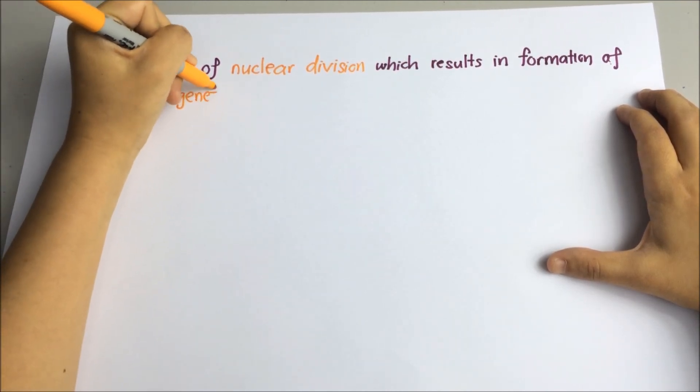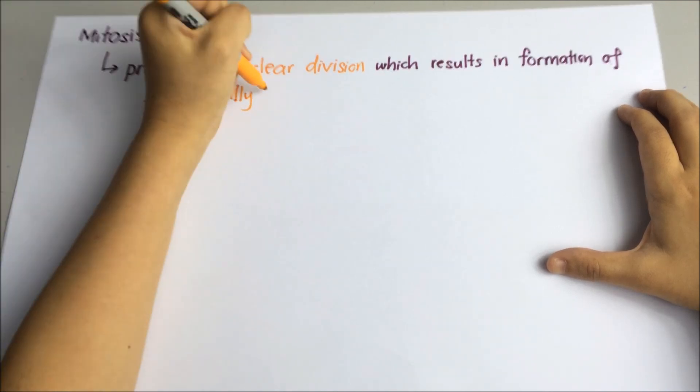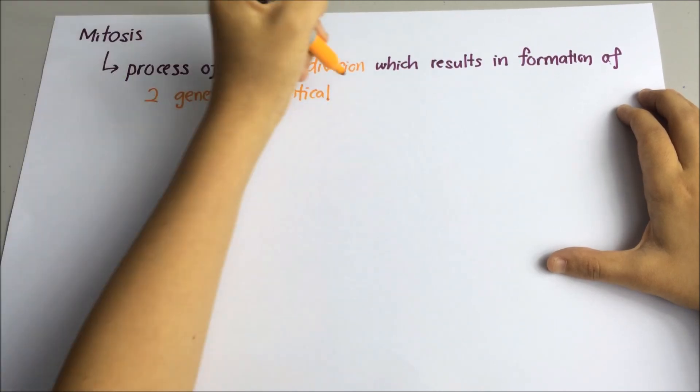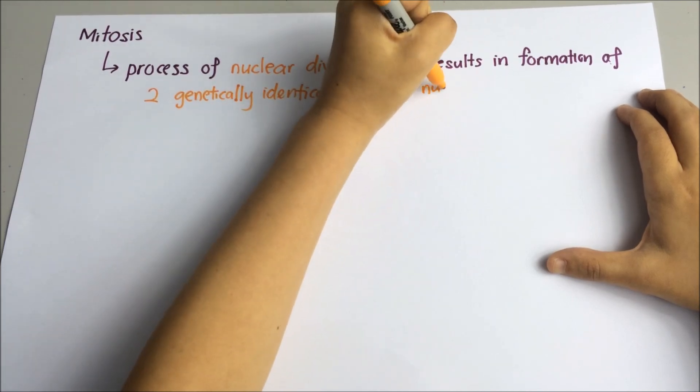So the key word here is genetically identical daughter nuclei. It means that it is a process of dividing one nucleus to form two nuclei which are the same as their parent cell.